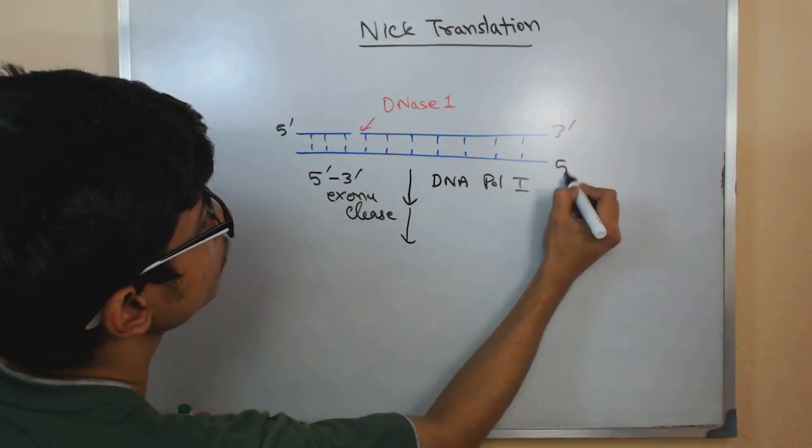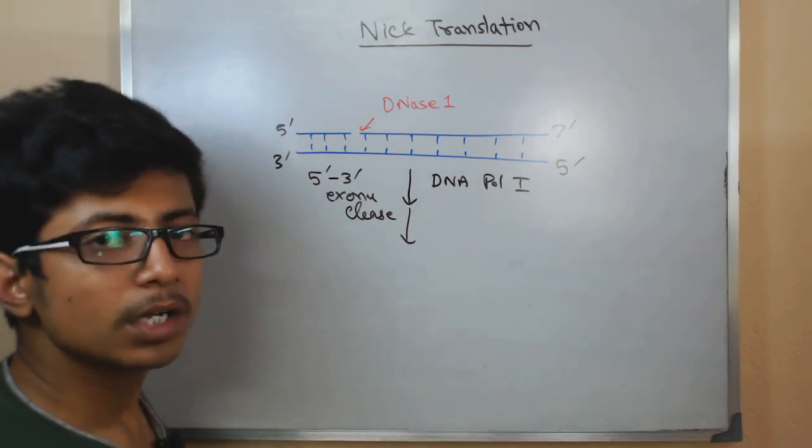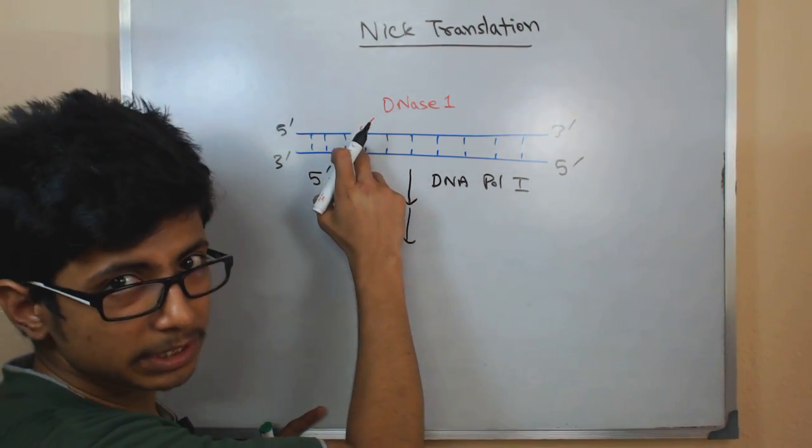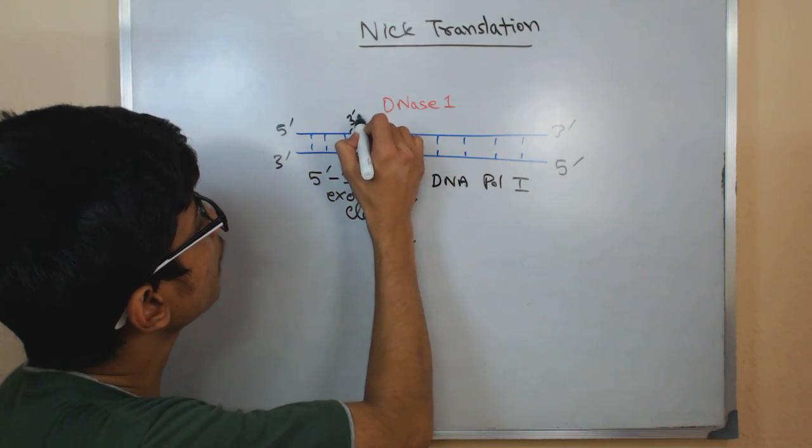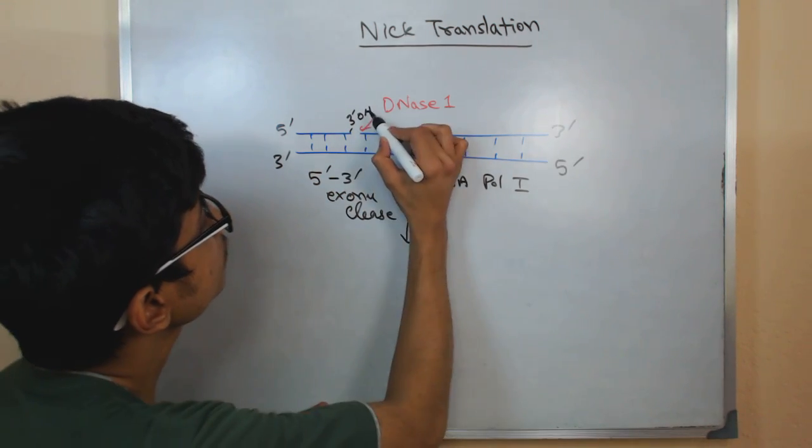Using that, what we can do - let's say here this is the 5 prime, 3 prime. So we cut here using DNase I. So it produces a 3 prime hydroxyl free there.